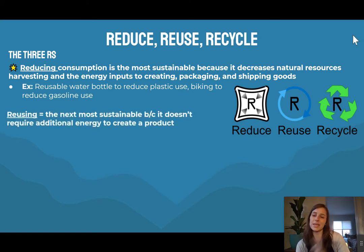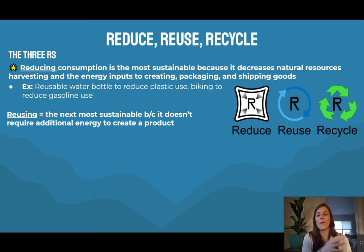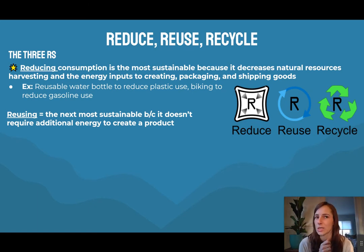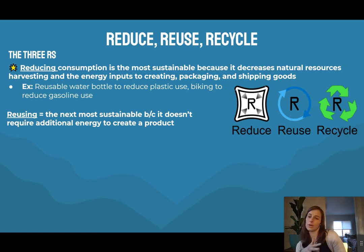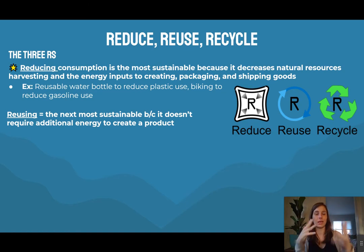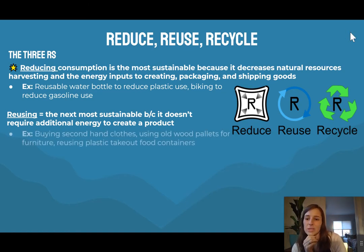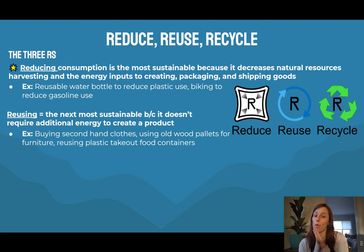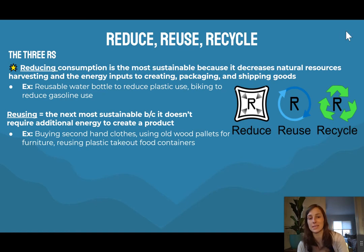Second in line is reusing, which is the second most sustainable because it doesn't require additional energy to create a product. Originally that energy was needed to first create it, but if you're reusing things, they don't have to keep being made. Examples include buying secondhand clothes, using old wood pallets for furniture, or reusing plastic takeout food containers.